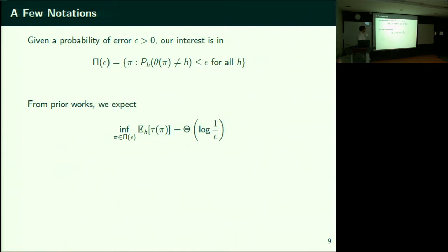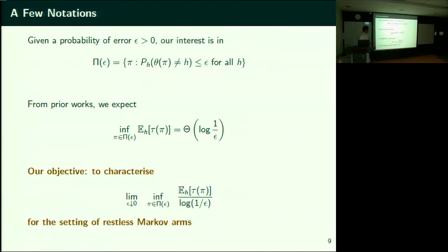From prior works we know that the expected time to identify the odd movie under policy π grows like log(1/ε), where ε is the probability of error. What we want to do is precisely capture this constant for the problem of restless Markov arms. We expect this behavior — what is this growth rate, and what does it tell about the problem itself?